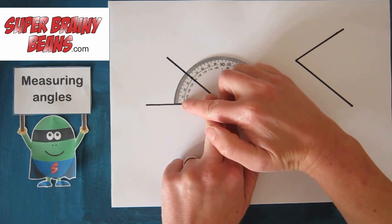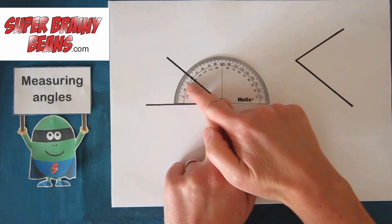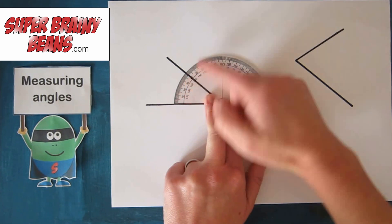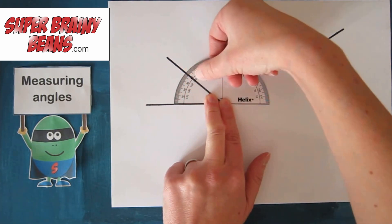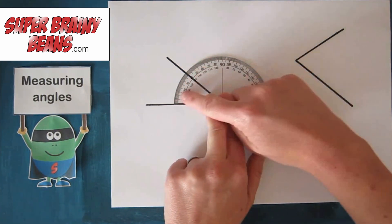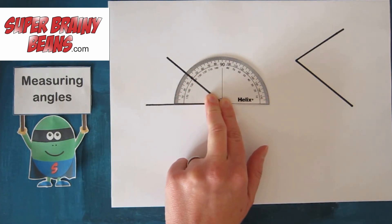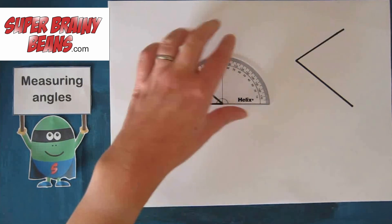Now when you read round your protractor, this is 10, 20, 30, 40, 50, so you're going to look along and see where the line joins at what number. This joins at 40 degrees. So I know this angle is 40 degrees.